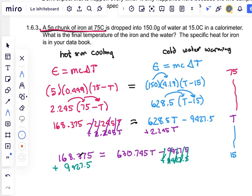And we get 168.375 plus 9,427.5 which is 9,595.875 equals 630.745T.